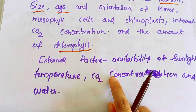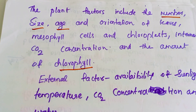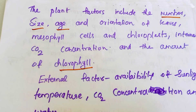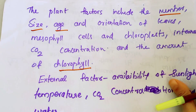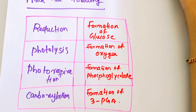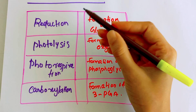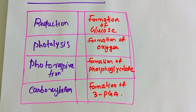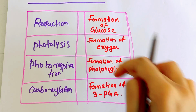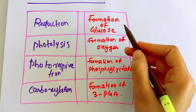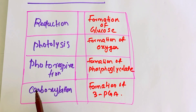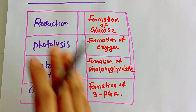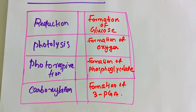The rate of photosynthesis depends on both external and internal factors. Internal factors include the number and age of leaves, rotation, and dependent processes such as photolysis, photorespiration, and carboxylation. These processes together determine how fast photosynthesis occurs.